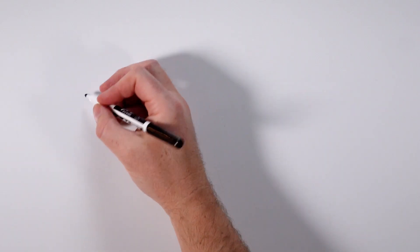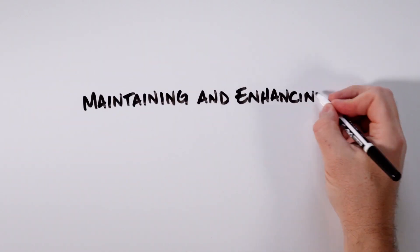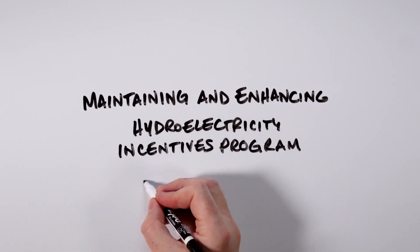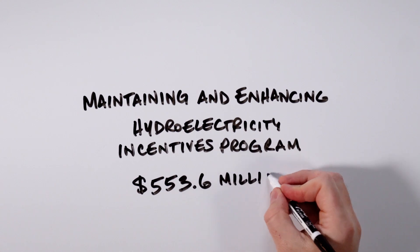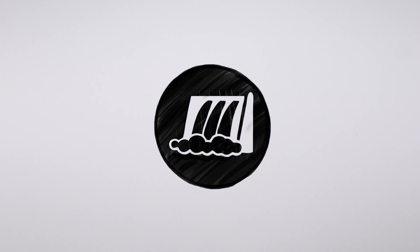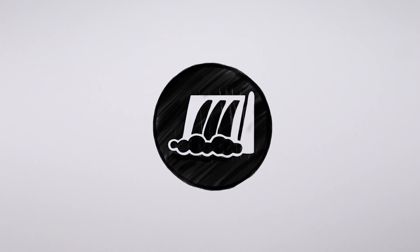Let's take a closer look at one section, the Maintaining and Enhancing Hydroelectricity Incentives Program. The BILD provided more than $550 million to the U.S. Department of Energy's Grid Deployment Office for these incentive payments. Under this new program, existing hydropower facilities can apply to make capital improvements related to three main areas,